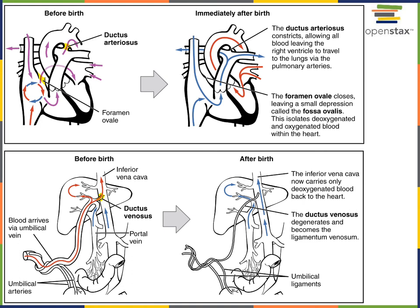The umbilical arteries and umbilical veins will also deteriorate after birth. The remnants of the umbilical arteries become the umbilical ligaments, and the remnant of the ductus venosus will degenerate, becoming the ligamentum venosum.